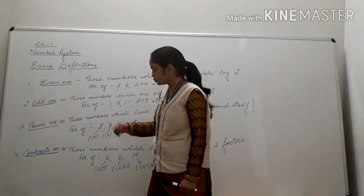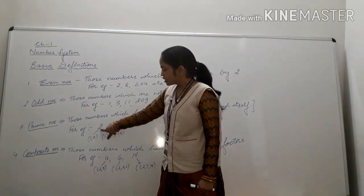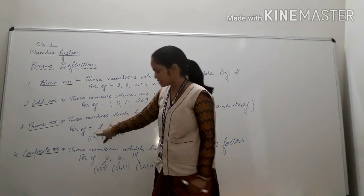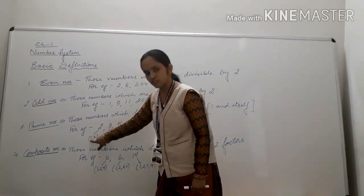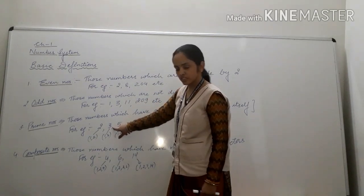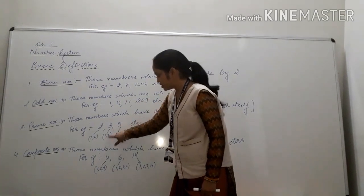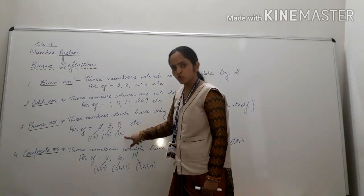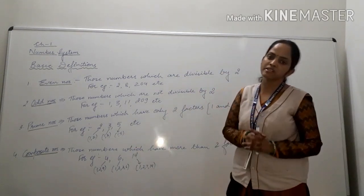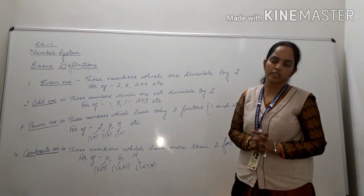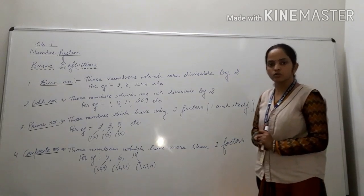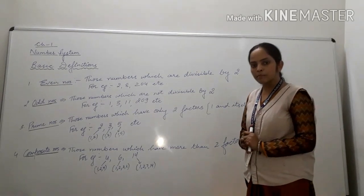For example, 2 has only 2 factors: 1 and 2. In the same way, 3 has factors 1 and 3; 5 has factors 1 and 5, and so on. Those numbers which are divisible by only 2 numbers — 1 and themselves — are known as prime numbers.